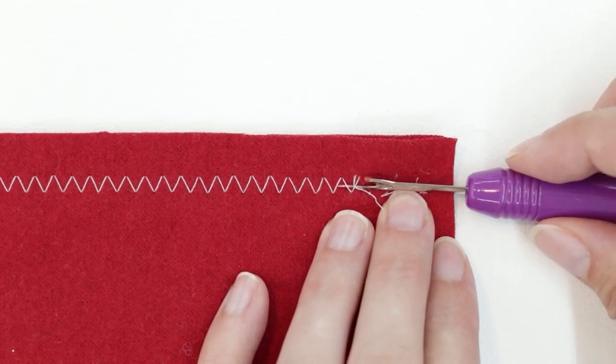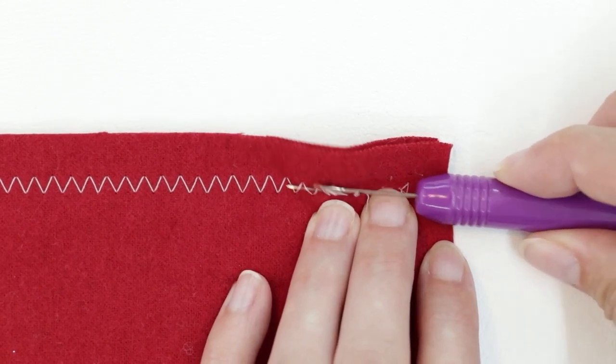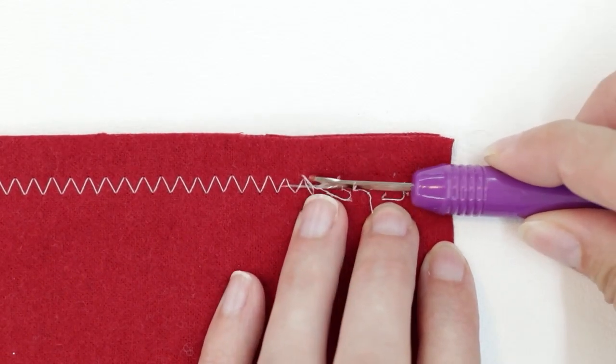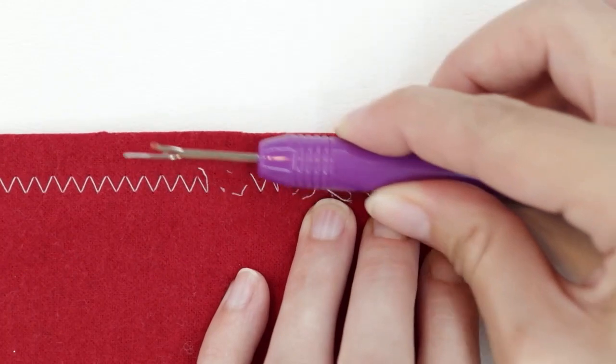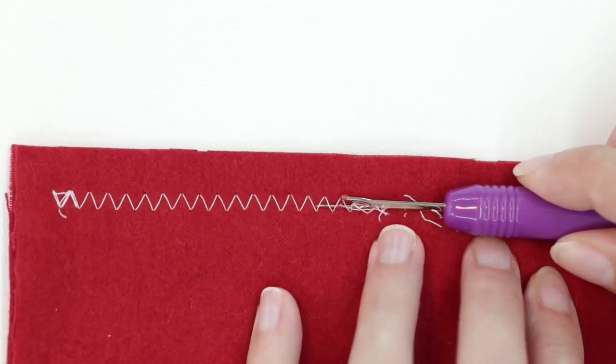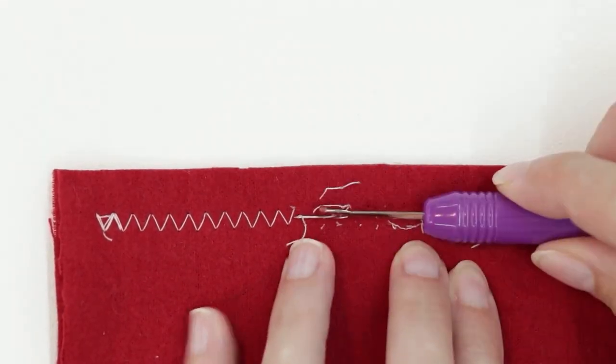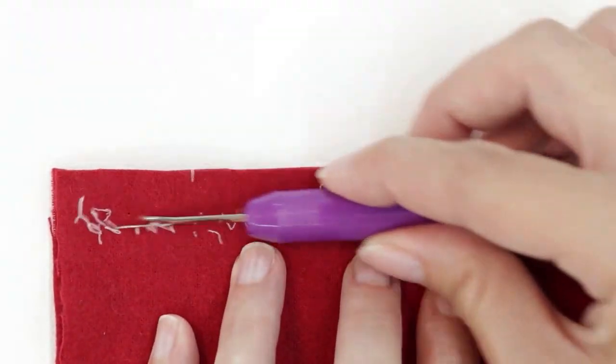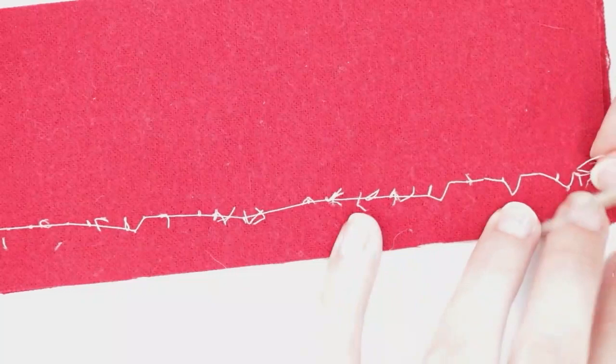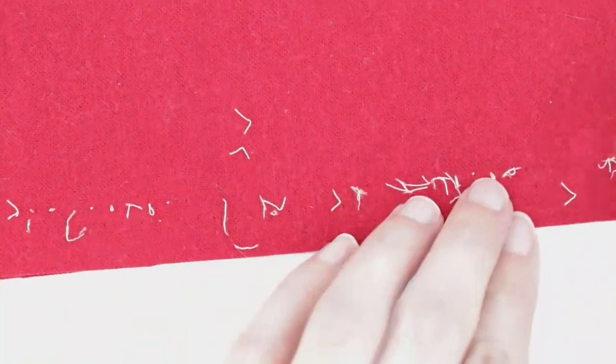You have to be really careful to make sure you're just under the thread and not the fabric. But you just slide it down. Pull your thread. And remove the excess.